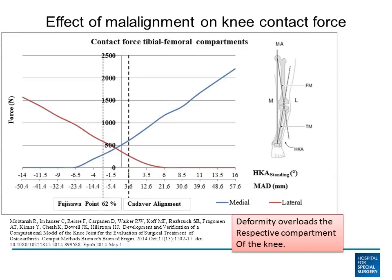This graph gives a depiction of the amount of force overload. In a normal situation, the load on both the medial and lateral compartments of the knee is about 400 newtons. The medial compartment loads are depicted by the blue line, the lateral compartment loads by the red line. With about a 10-degree bow leg or varus deformity, that load on the inside part of the knee increases from about 400 newtons to about 1500 newtons. The take-home message is that deformity overloads the respective compartment of the knee, and bow leg alignment overloads the medial side of the knee.